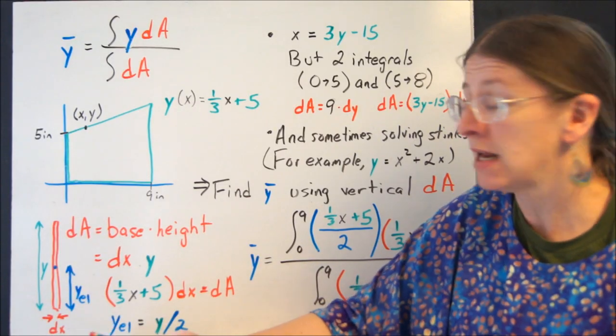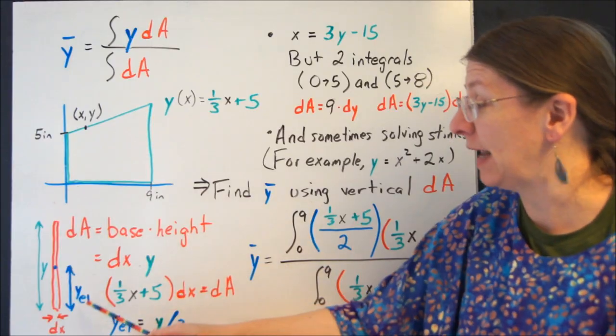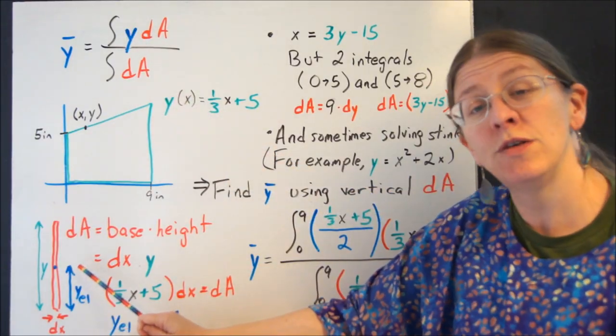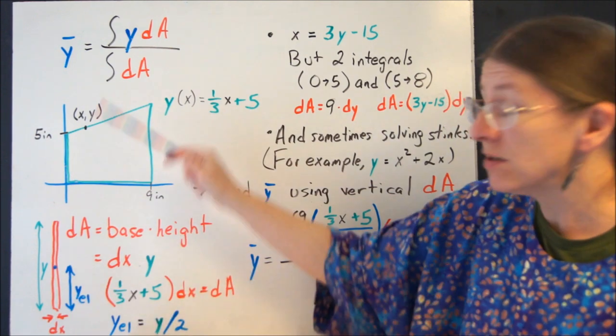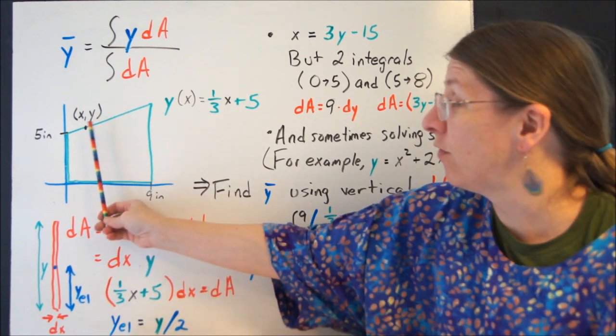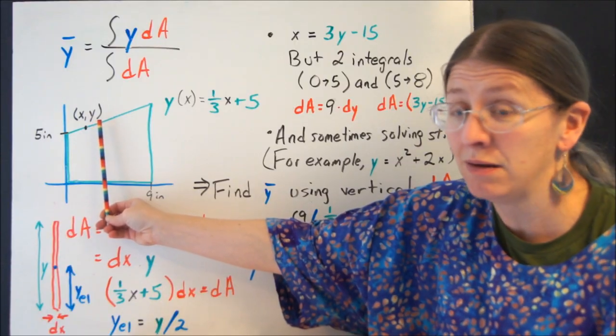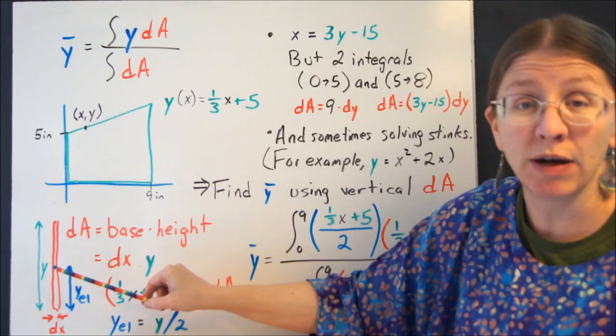If that doesn't make sense, work with me for a minute here and say that that blue y is actually the coordinate for the centroid of that differential area. So where's the middle of my rectangle? If I have a vertical rectangle, the centroid of the rectangle is going to be in the middle. So the middle of this would be halfway up.